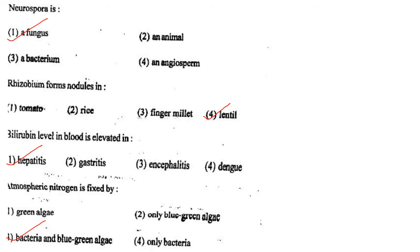Next one: Bilirubin levels in blood are elevated in option 1, hepatitis; option 2, gastritis; option 3, encephalitis; option 4, dengue. Answer is option 1: hepatitis.